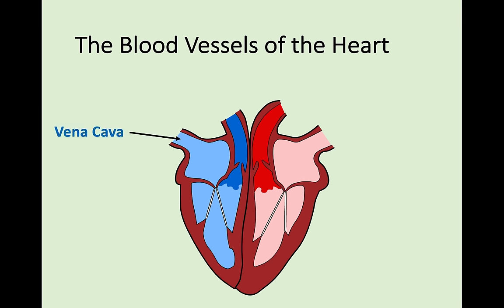The first vessel is the vena cava, which goes into the right atrium. The vena cava is responsible for bringing deoxygenated blood from the body to the heart. Deoxygenated blood - blood that has given away all its oxygen around the body - has now made its way back to the heart. Because it's coming to the heart it must be a vein, so the vena cava is a major vein. This deoxygenated blood needs to come back to the heart to get pumped to the lungs to refuel.